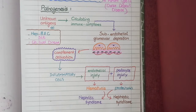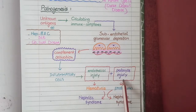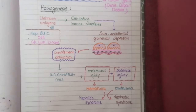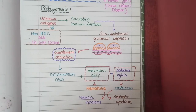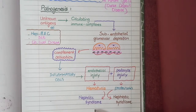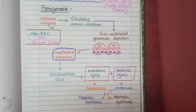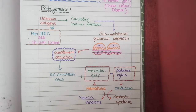One presenting feature of membranoproliferative glomerulonephritis is nephritic syndrome. In some cases the damage by leukocytes also extends to the podocytes, resulting in proteinuria that can be in the subnephrotic range or progress to nephrotic syndrome. Therefore, membranoproliferative glomerulonephritis can present with nephrotic syndrome, nephritic syndrome, both combined, or sometimes isolated hematuria and proteinuria without full nephrotic or nephritic syndrome.